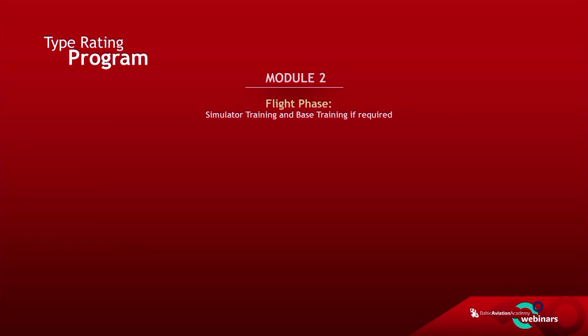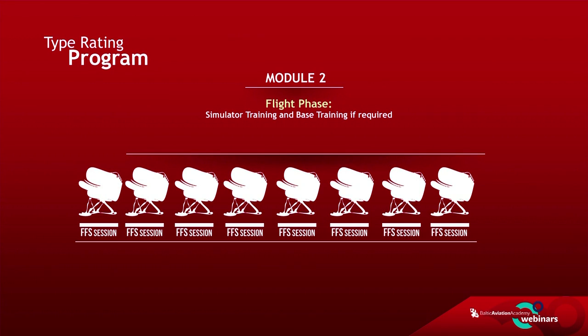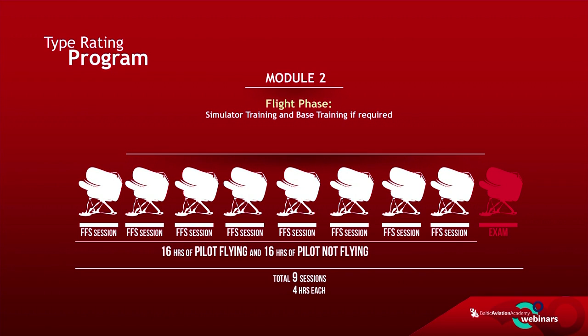After successfully completing your ground phase with all progress tests and final exam, your second step will be the flight phase. The flight phase consists of 9 sessions in a full-flight simulator. Each FFS session takes 4 hours of flight training for a crew of 2 pilots. A minimum required period is 11 days, during which training time is divided between 16 hours of pilot flying and 16 hours of pilot not flying. The exam lasts 4 hours for 2 pilots, making 36 hours in total of pilot practical training.